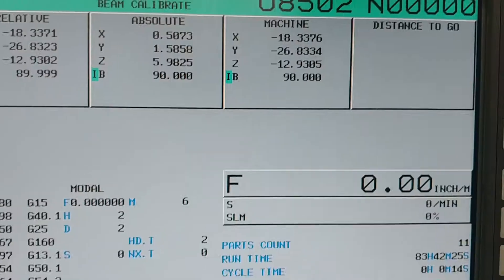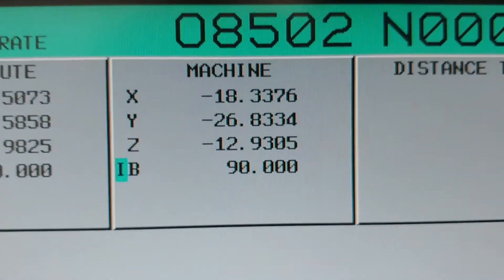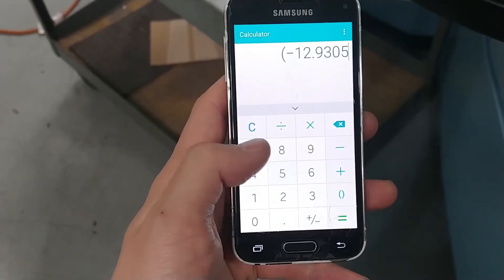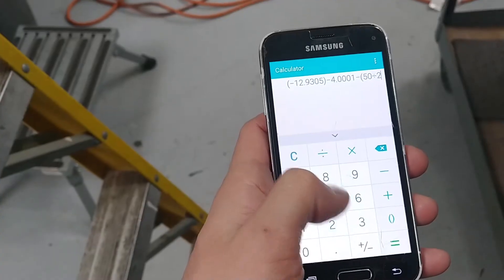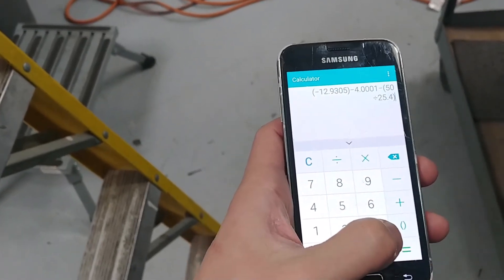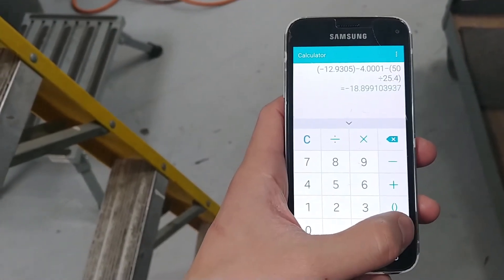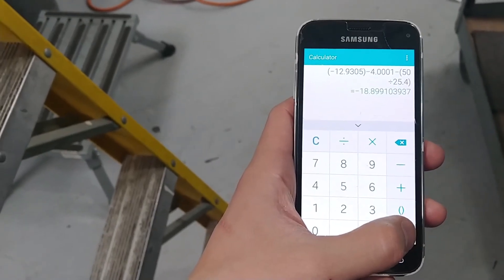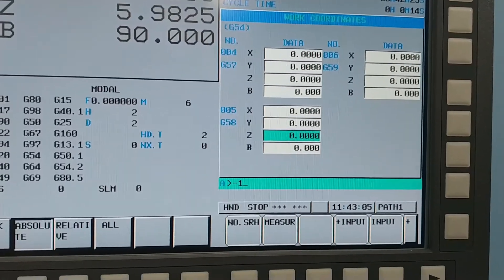Go to the position display page. Record the Z coordinate from the machine coordinate readout. Subtract the length of the master tool and the length of the gauge block. The resulting number is the machine Z coordinate of the surface.